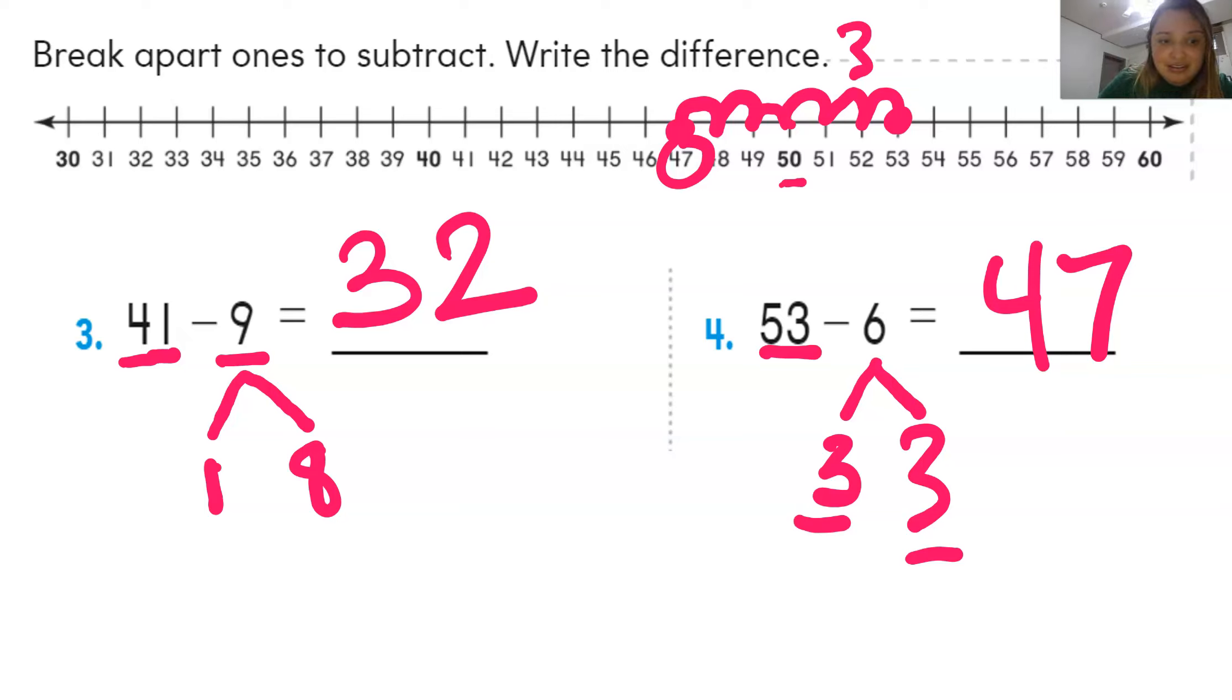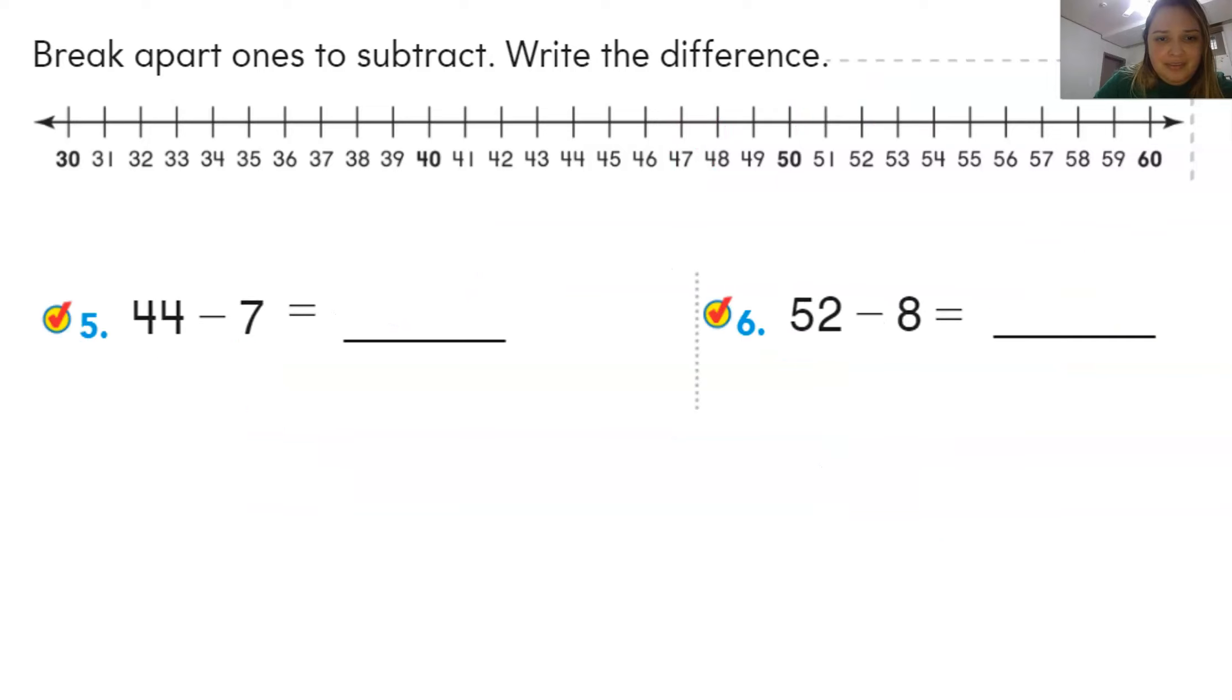Want to do one more? Or no? Let's do one more. 44 minus 7. I'm going to put my little dot in the 44. And then I'm going to do my little triangle. From 44, how many does it take me to get to 40? 1, 2, 3, and 4. 4 plus what equals 7? 4 plus 3 equals 7. So I already subtracted 4. Now I'm going to subtract 3 more. 1, 2, and 3. And my answer is 37.